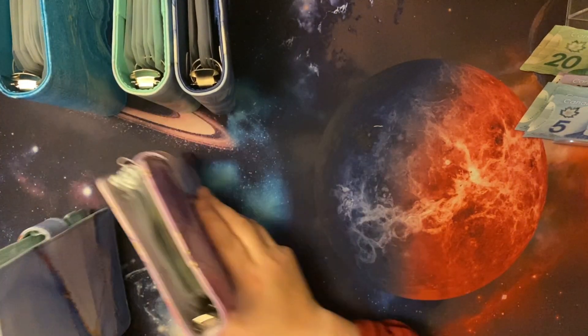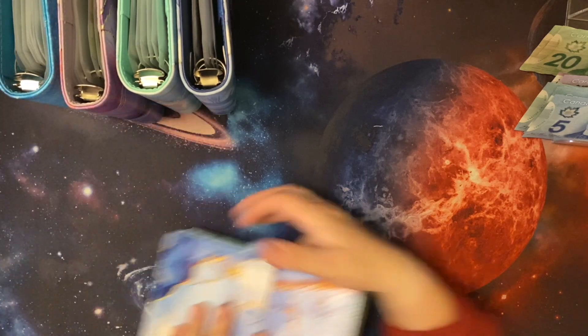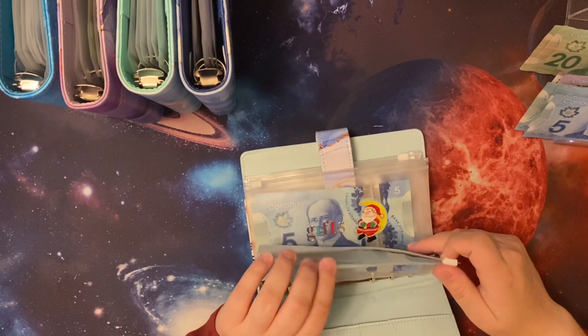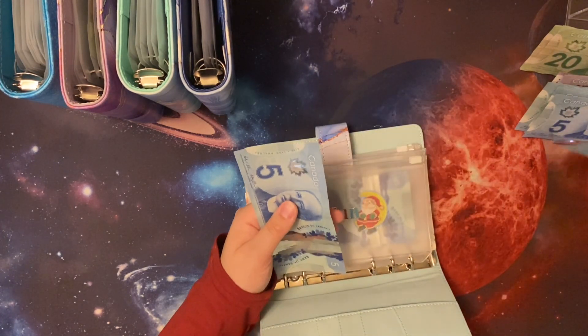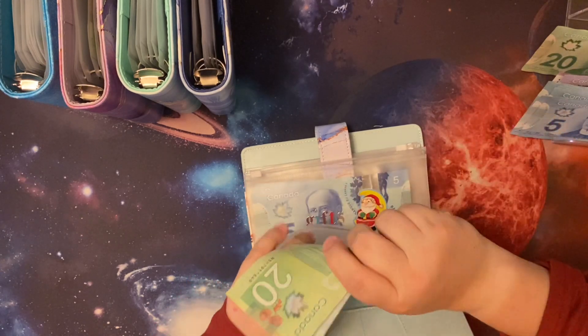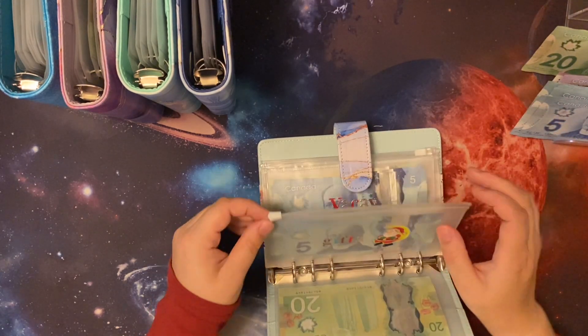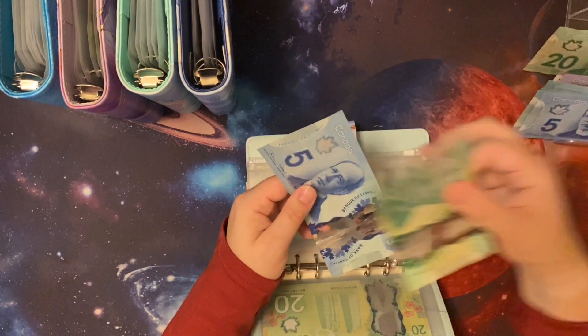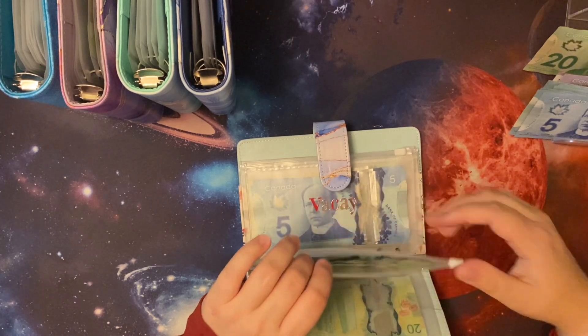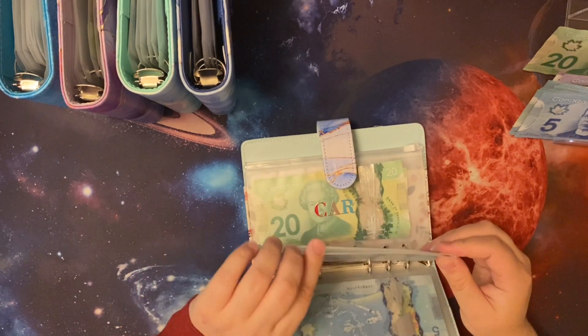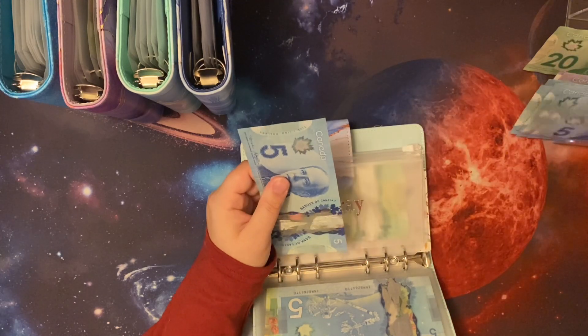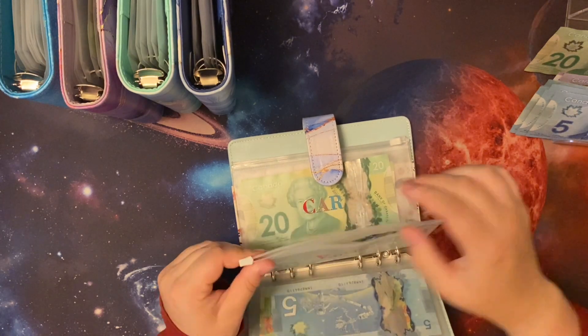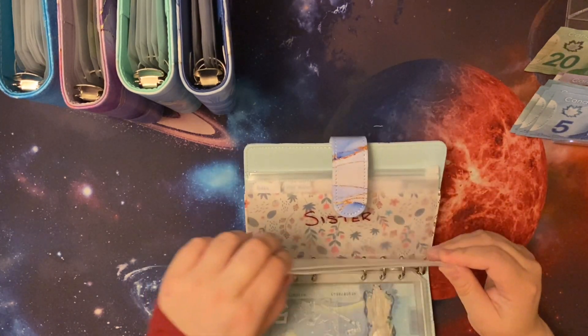For my sinking funds, I said I was going to do $40. So, I'm going to do $10 in each. Take that out, put this in. Gifts, I'm going to do the same. Take that out, put this in. Vacay, I think I'm probably going to do the same thing. Take that out, put this in. And car, I just want to put $10 in.